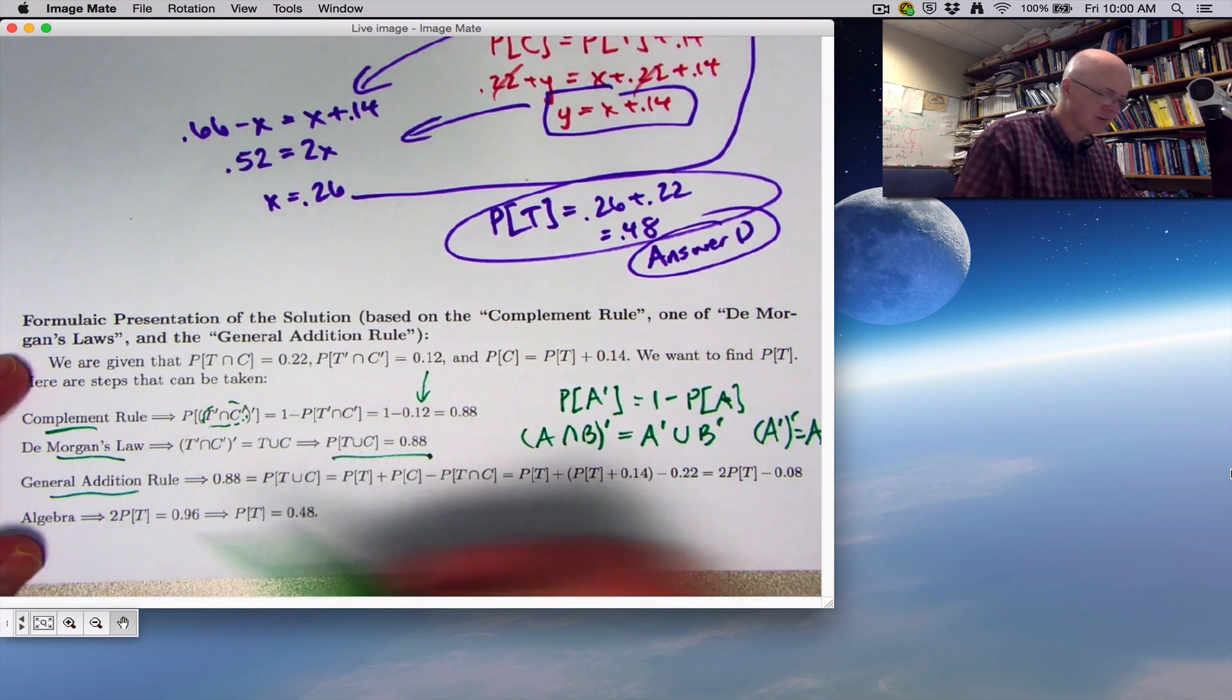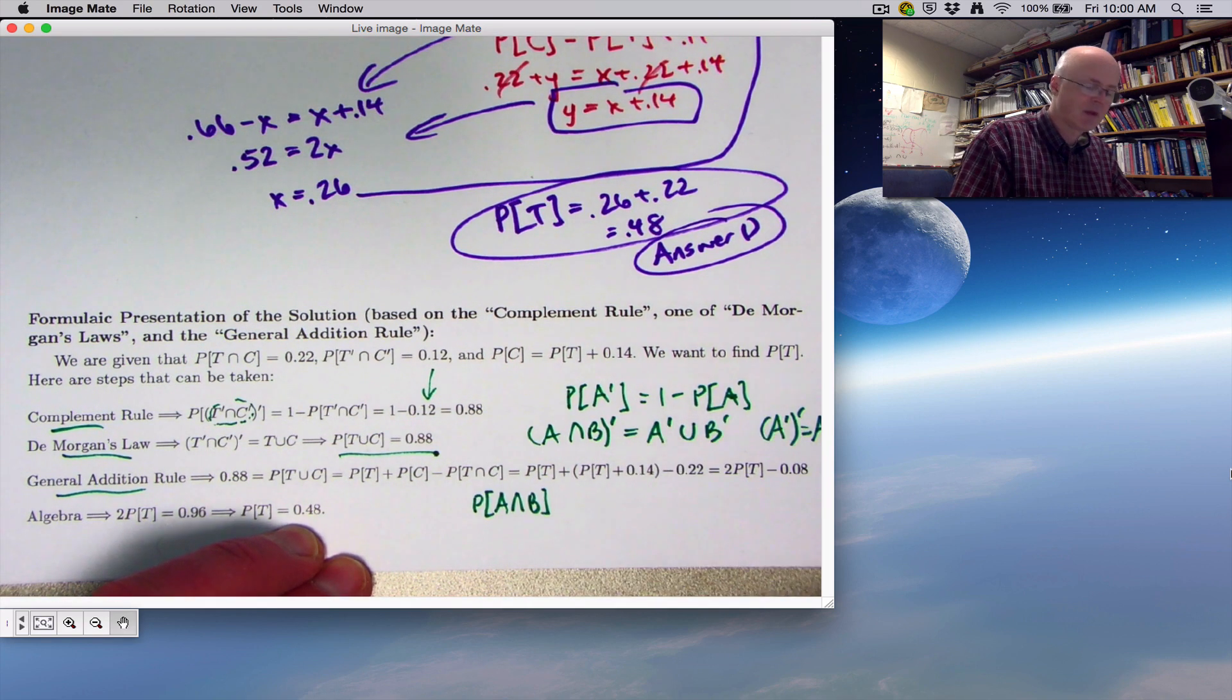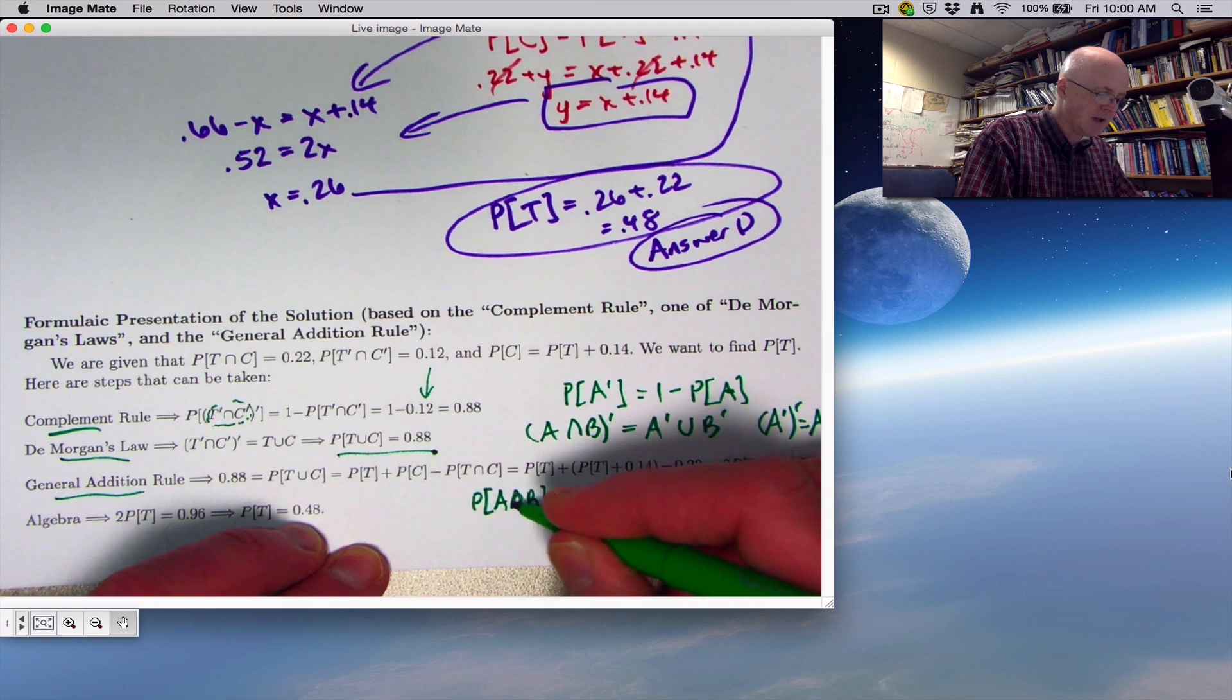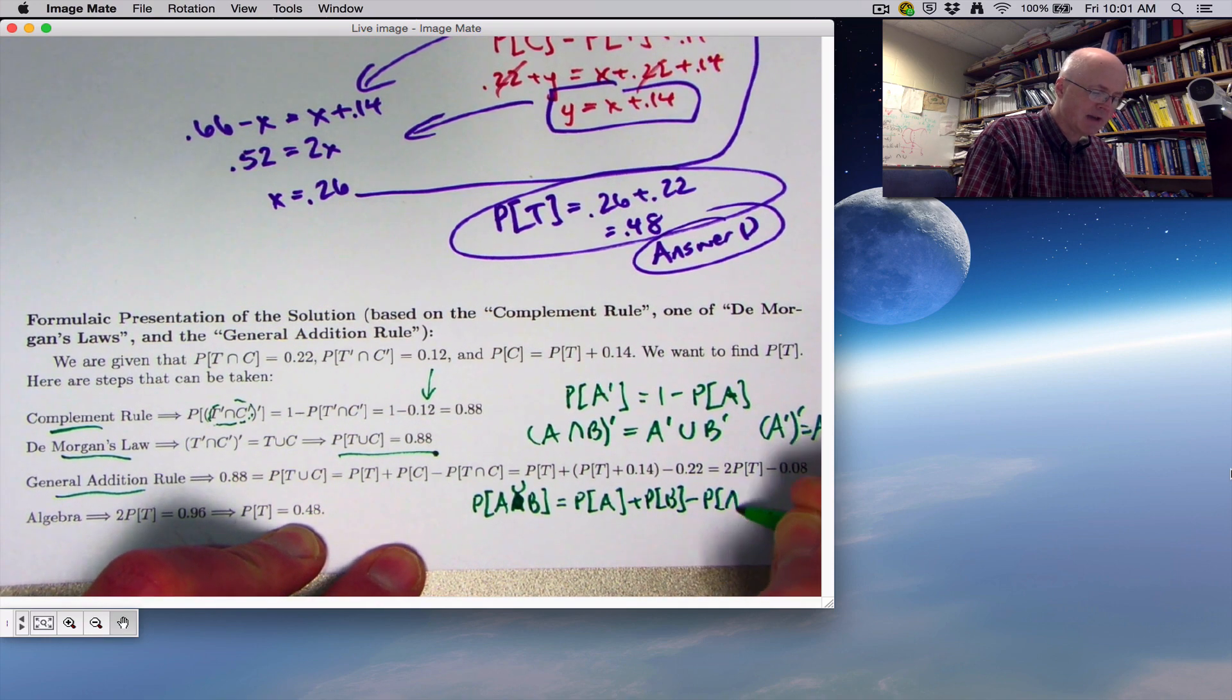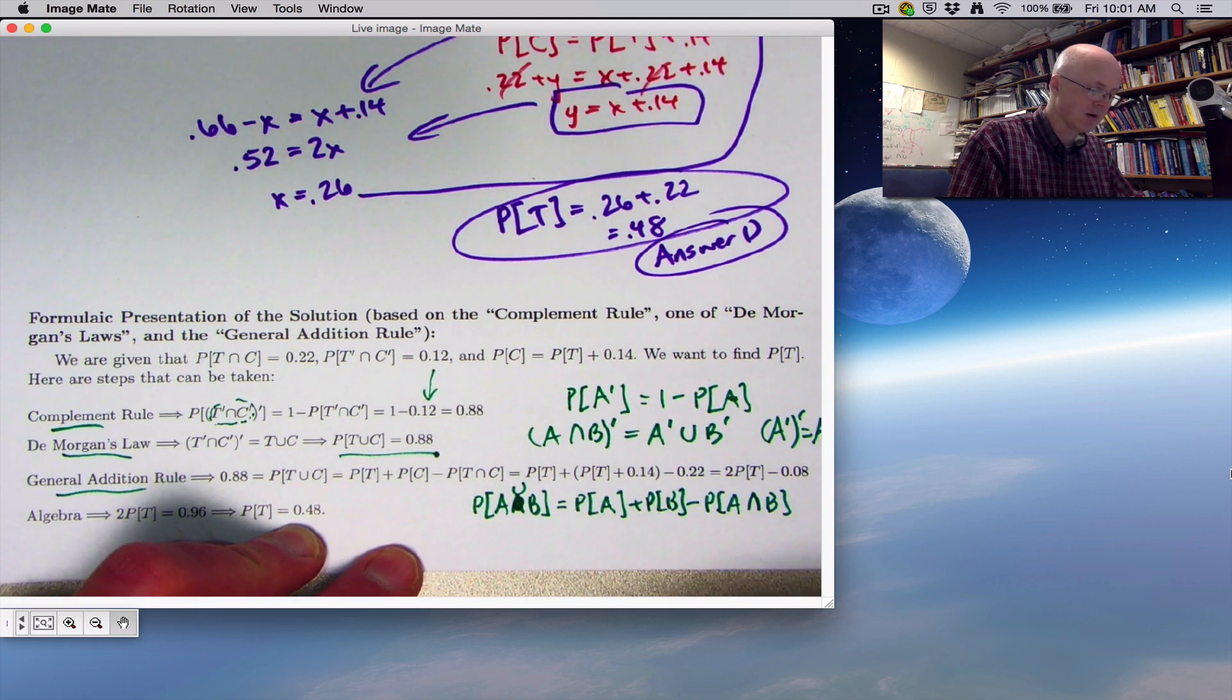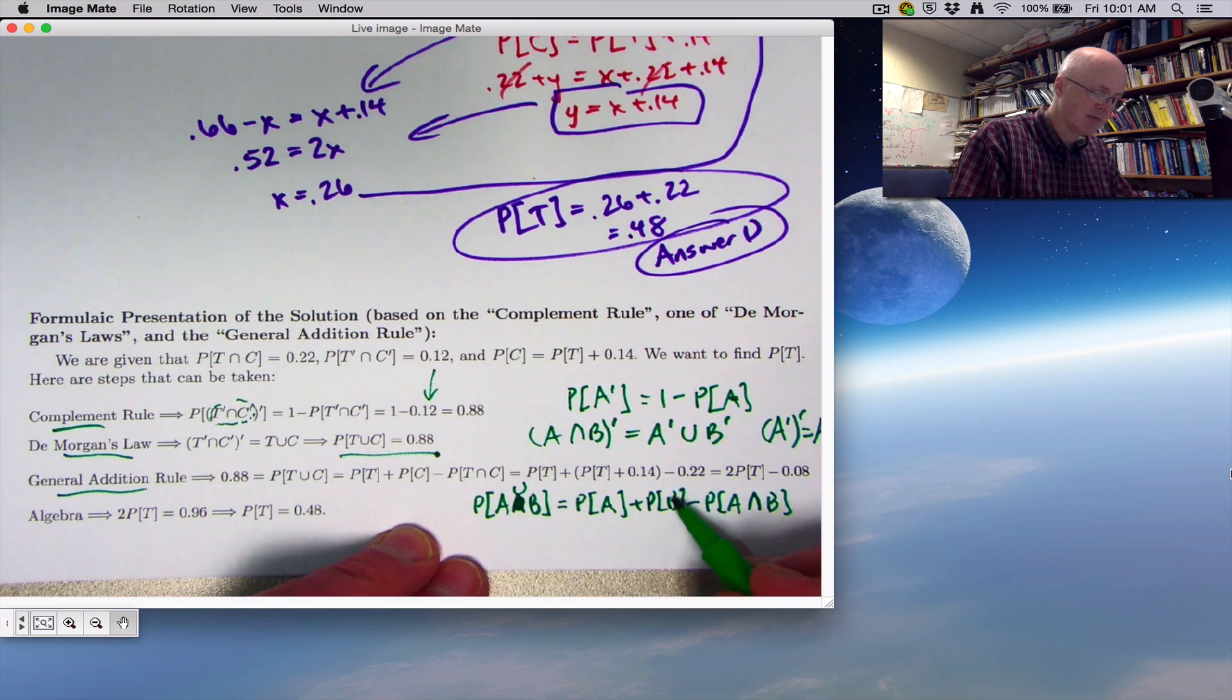What's the general addition rule? In general, if you have arbitrary events A and B that could have some overlap, the probability of A union B is the probability of A plus the probability of B minus the probability of A intersect B. Intersect stands for and, union stands for or. The probability of being in A or B is the probability of A plus the probability of B minus the probability of both occurring.